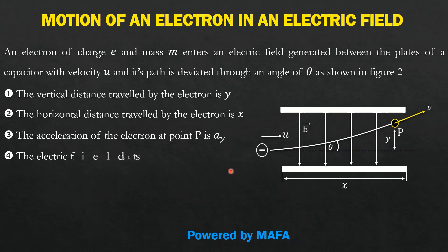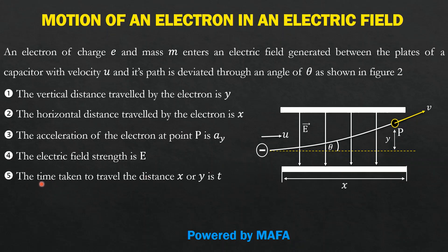We will define the electric field, which may or may not be given, and find the time t taken for the particle to travel distance x or y. Finally, we will find the speed of the particle at point p — at any point within the electric field. This question came from the Grace Academy National Olympiad, given to advanced level students as a physics question with around five equations and multiple choice options, but in this video we will generalize the concepts.